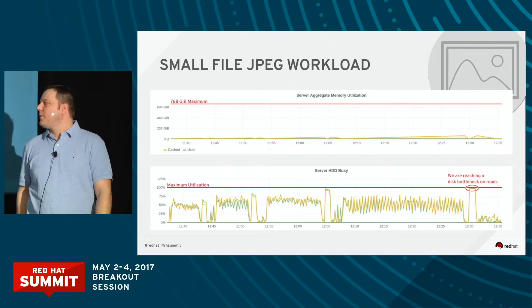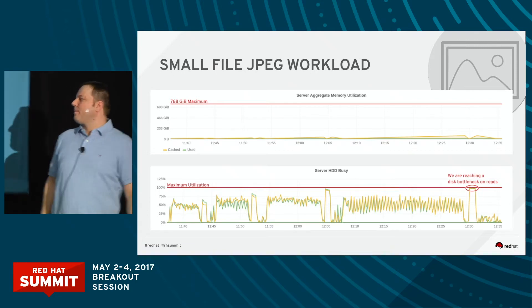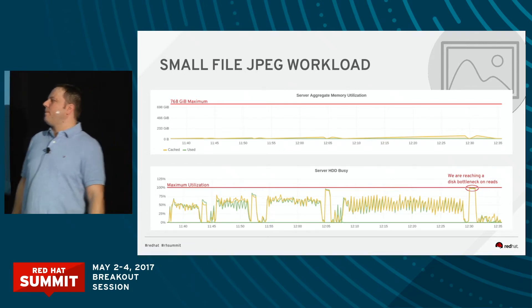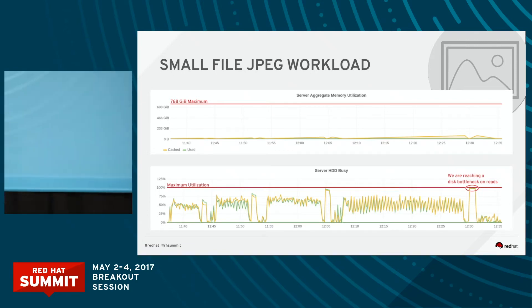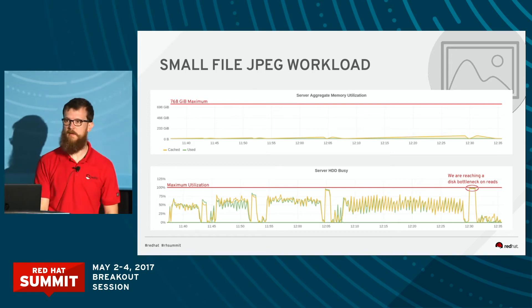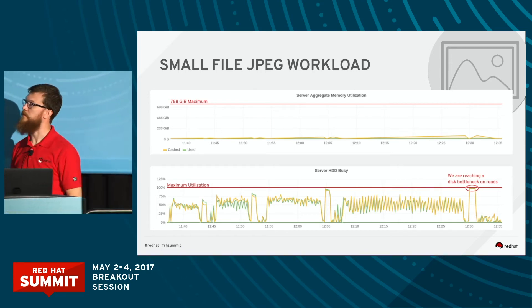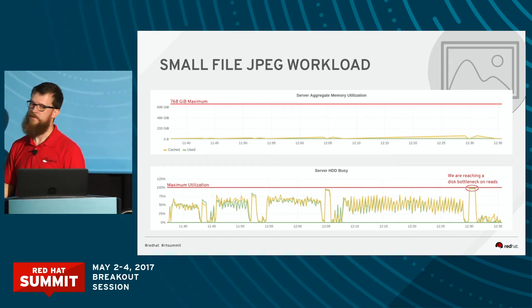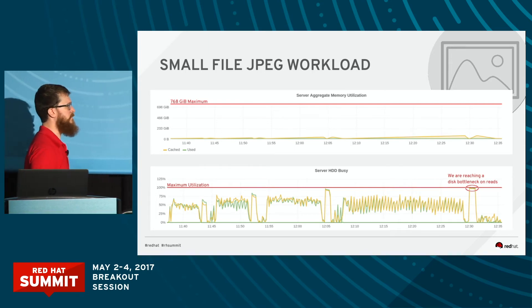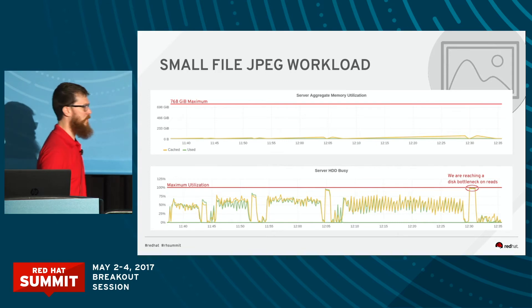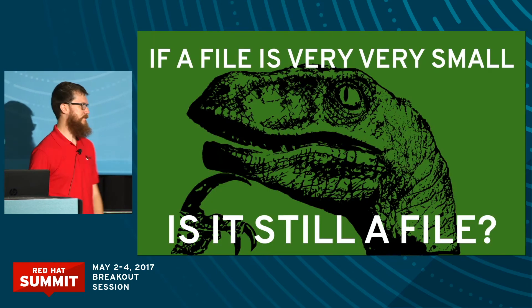We never see it as a system resource limitation because Gluster is really kind of getting in the way of these write throughputs. So that starts to beg the question — when files get that small, are they really acting like files anymore?